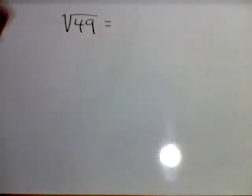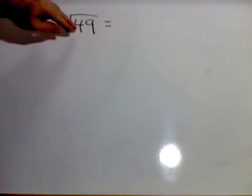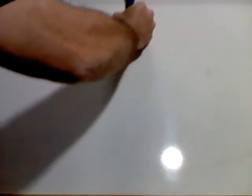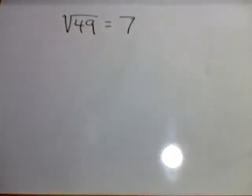Square root of 49, no index shown here, so we understand it to be a 2. So, give me the number times itself 2 times that gives us 49. That number is 7.